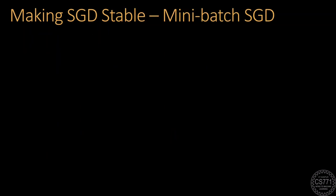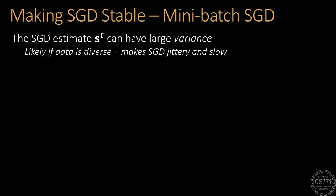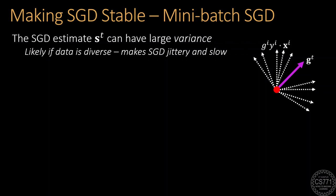Now, despite its speed and simplicity, the SGD algorithm as we have presented earlier can suffer from large variance and stability issues as it uses a single data point to get a descent direction in each iteration. This is more likely if the data is very diverse. In this cartoon, we see a scenario where the individual data points are offering sub-gradients that point in very diverse directions. Now, GD would have averaged all these out to get the overall sub-gradient.